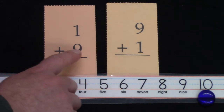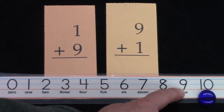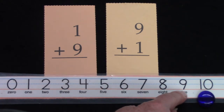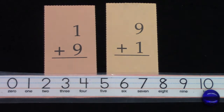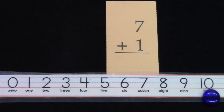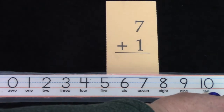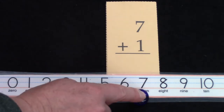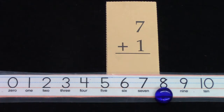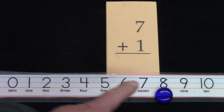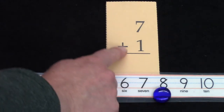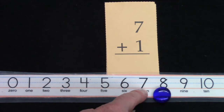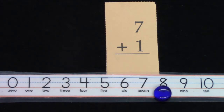Did you notice that whenever we add plus 1, it's always the next number on the number line? 9 plus 1 is always just the next number. Let's test that. Let's try 7 plus 1 — let's not count at all. Let's just put our gem on the number 7. If we add 1 to it, it is just the next number on the number line. 7 plus 1 is 8. When we add plus 1, our answer is going to be the next number on the number line.